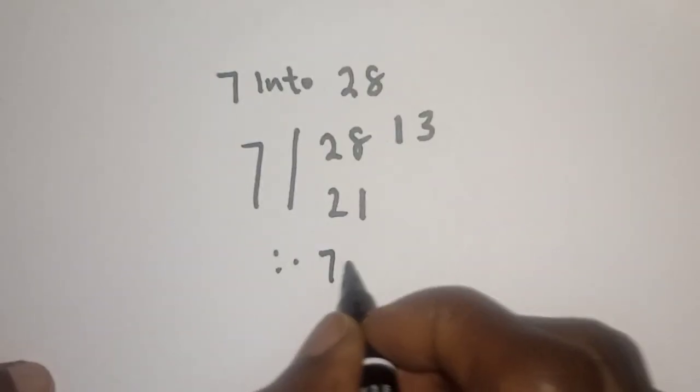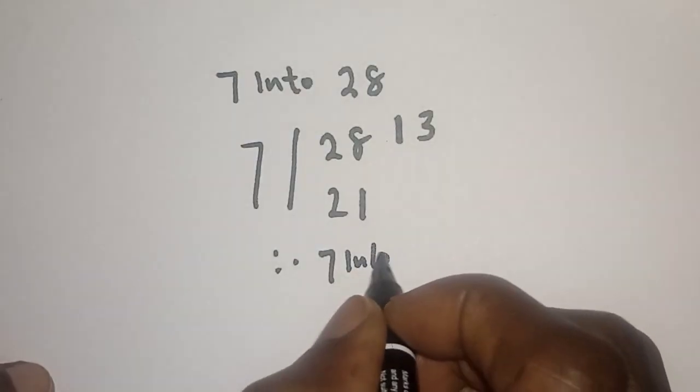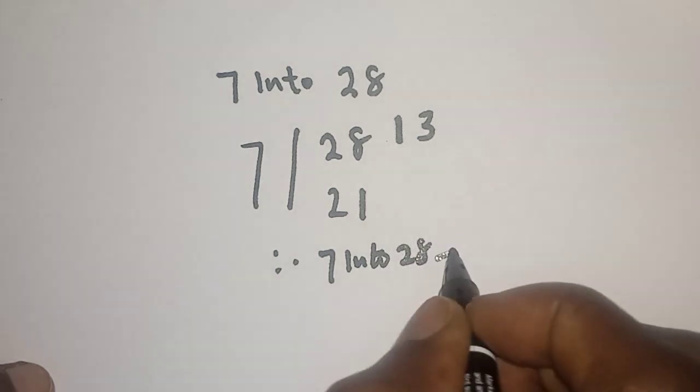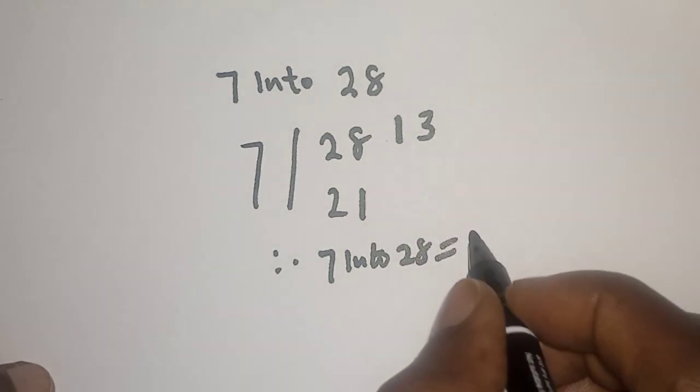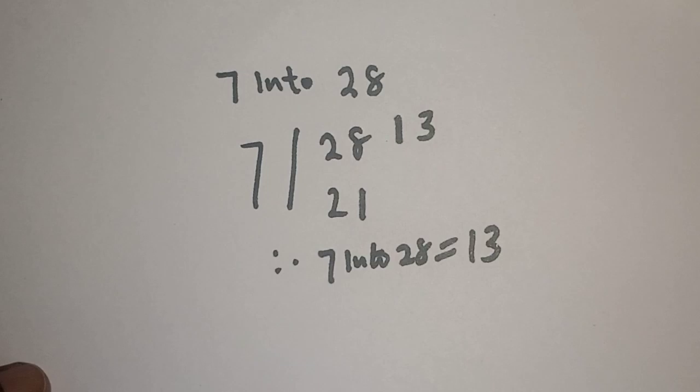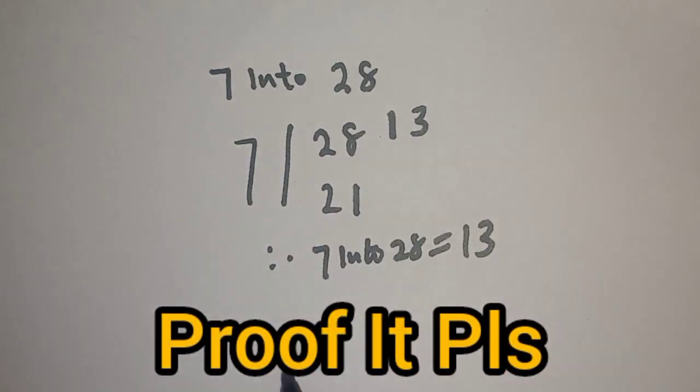Therefore, 7 into 28 is equal to 13. This can be proved again. Now let's prove this.